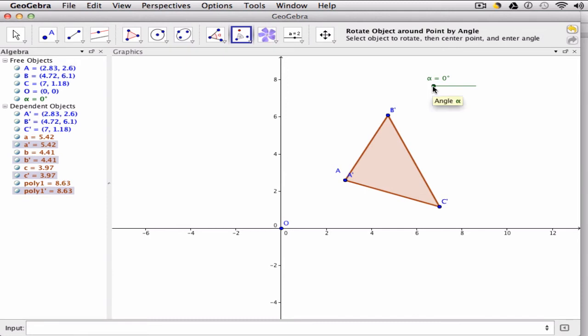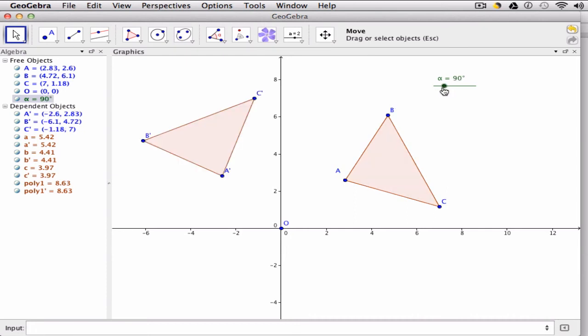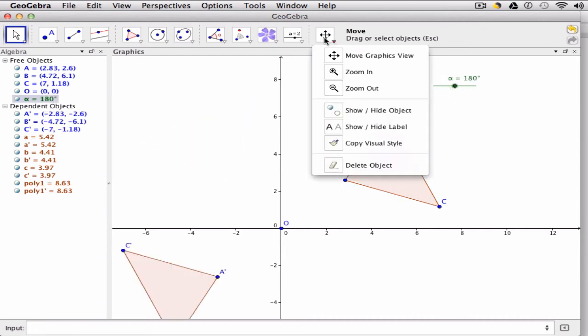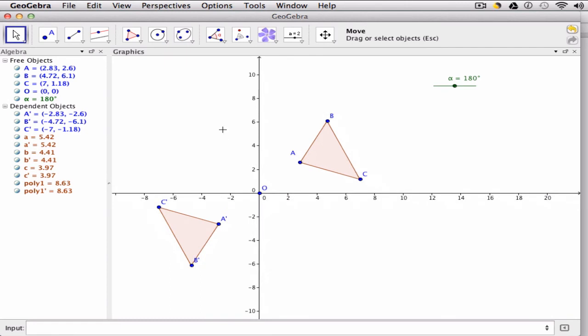And now, what happens is, as I drag my slider, in increments of 90, let me just zoom out a little bit. As I change the slider, I turn the triangle around, so I can see that rotation process.